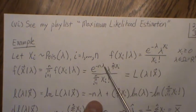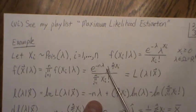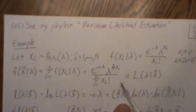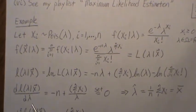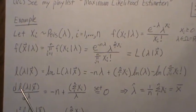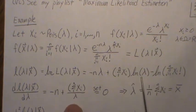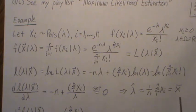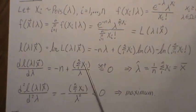The log of the product becomes a sum of logs; the log of the exponential cancels with the exponent, and we bring the log of the factorial term out front. To find the maximum, we take the first derivative of the log-likelihood and get minus n plus the sum of the xᵢ's over lambda. Setting that equal to zero and solving for lambda, we get that the maximum likelihood estimate is the sample mean.